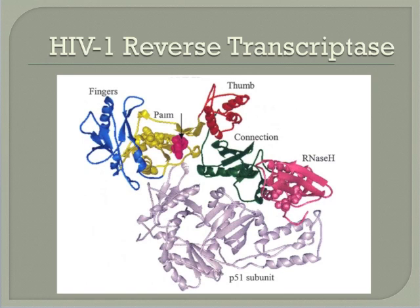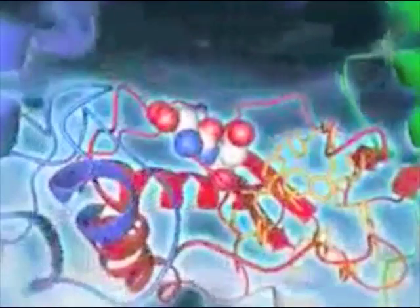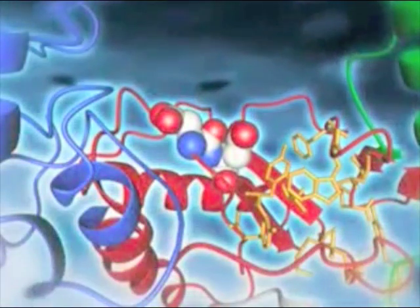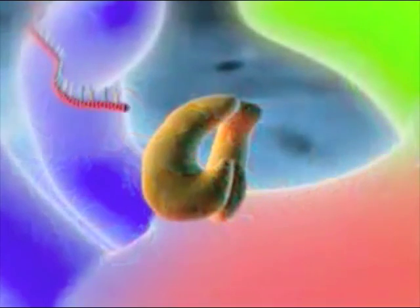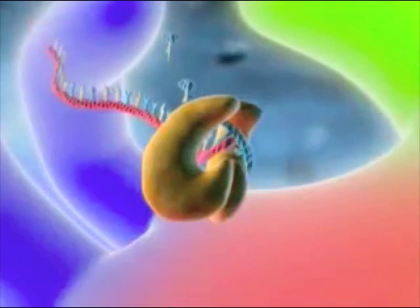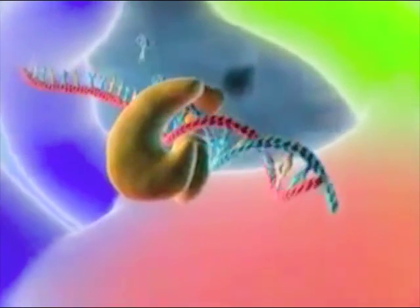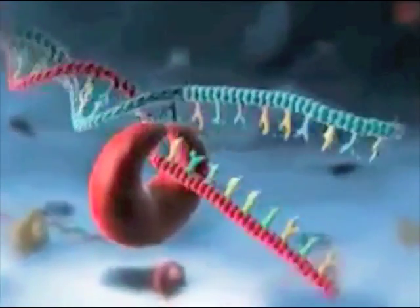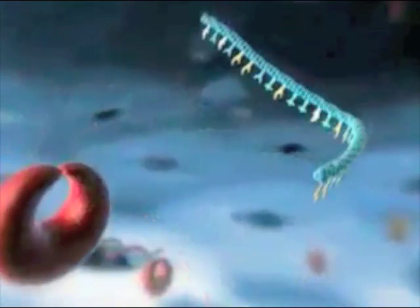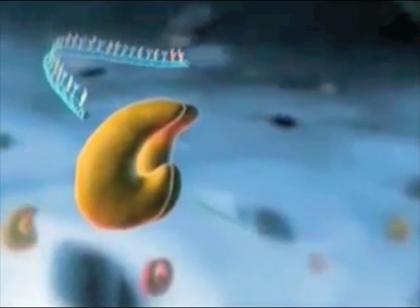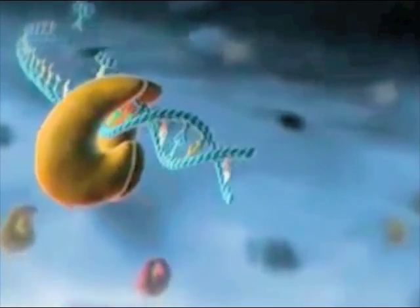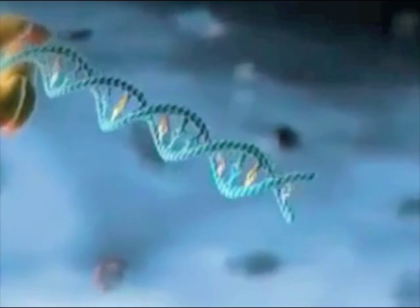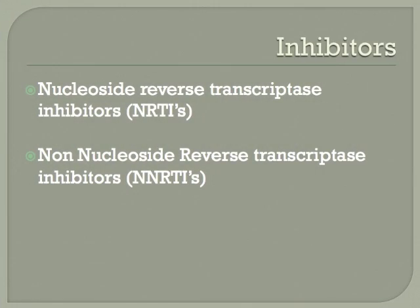At the polymerase active site, single-stranded viral RNA is transcribed into an RNA-DNA double helix. Ribonuclease H breaks down the RNA. The polymerase then completes the remaining DNA strand to form a DNA double helix. This proviral DNA contains the genetic material of HIV-1.